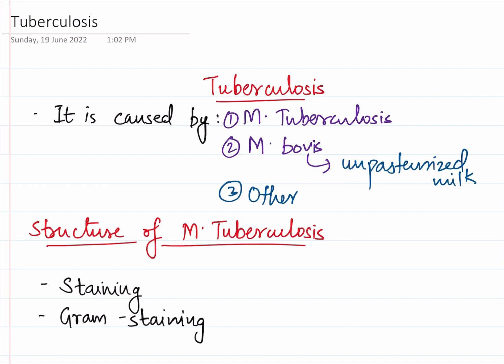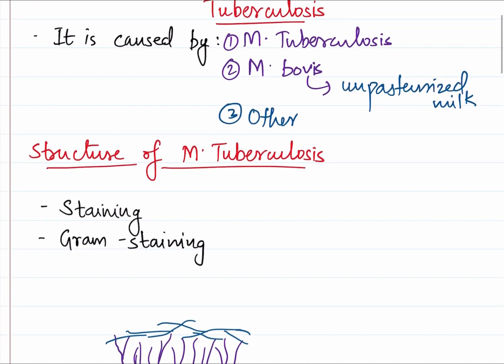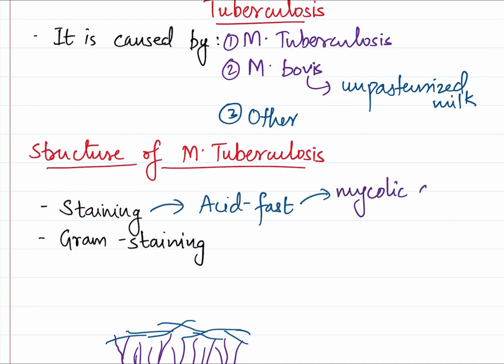Now let's move into the structure of Mycobacterium tuberculosis. The peculiarity of all species of Mycobacterium, whether it is Mycobacterium tuberculosis, Mycobacterium leprae, or even non-tuberculous Mycobacteria, is that they are acid fast. That is, they have the ability to retain acid, and this is due to the presence of mycolic acids in their cell wall.